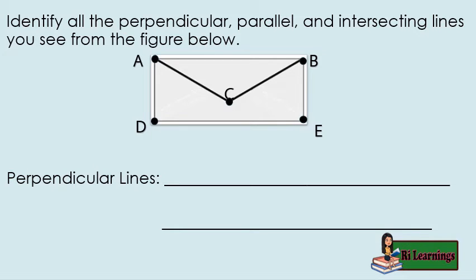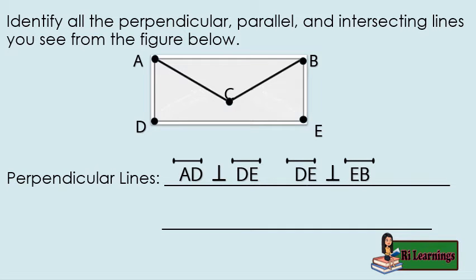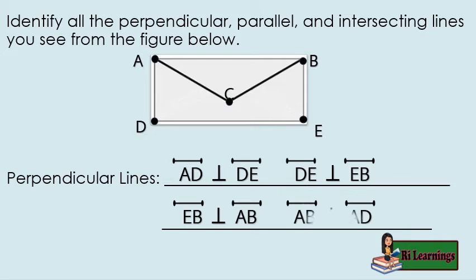What are the perpendicular lines? Line segment AD is perpendicular to line segment DE. Line segment DE is perpendicular to line segment EB. Line segment EB is perpendicular to line segment AB. Line segment AB is perpendicular to line segment AD.